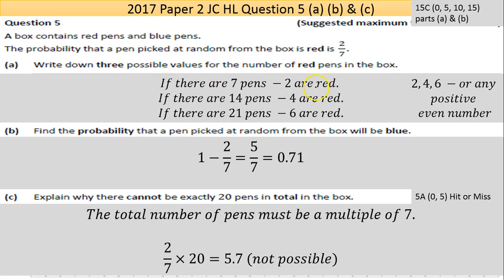Now obviously it can't be negative. Part B here says find the probability that a pen picked at random from the box will be blue. Now there's a few ways of doing this. If there's two red, five must be blue, so it's a 5/7 probability. Or you could take your red probability from the total probability of 1 and you get your 5/7 that way.